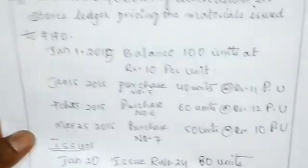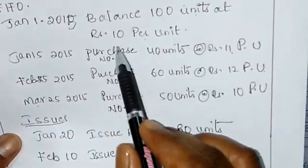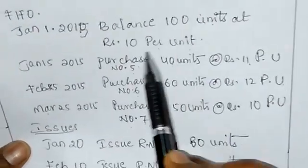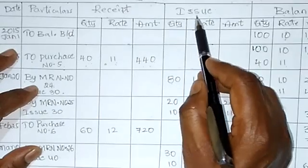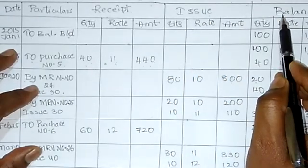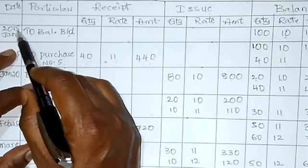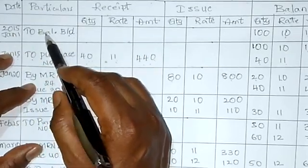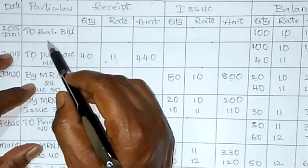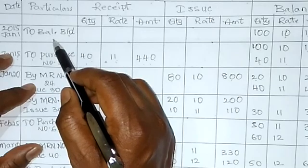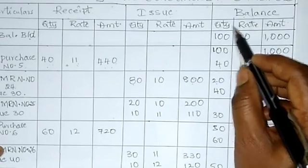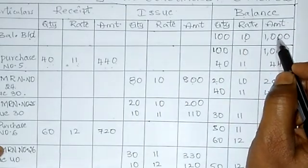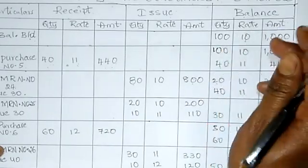First date: January 1st 2015. In the problem, opening balance is 100 units at rate Rs.10 per unit. Since this is a balance, we show it directly in the balance column — not in receipts or issues column. Particulars: write 'To balance brought down'. Balance column: quantity 100 units, rate Rs.10.